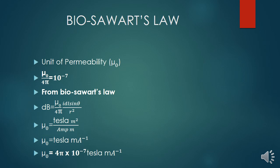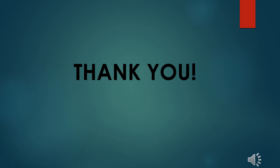Now we take out the unit of permeability of free space. Mu-0 upon 4 pi equals 10 raised to the power of minus 7 units, meaning mu-0 equals 4 pi into 10 raised to the power of minus 7. Since dB has a unit of Tesla, putting the units into the equation of Biot-Savart's law: dB has units Tesla meter square, R square has units meter square, divided by ampere, and DL has units meter. Therefore, mu-0 has the unit Tesla meter ampere inverse. Since 4 pi is a constant, the unit of mu-0 is Tesla meter per ampere. That's all for today. Thank you so much.